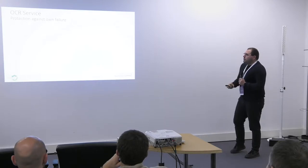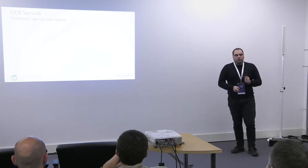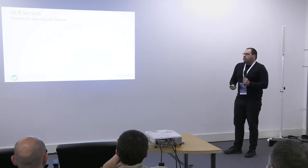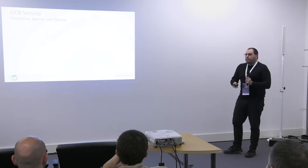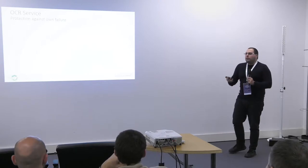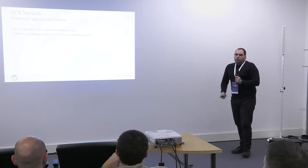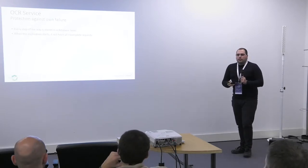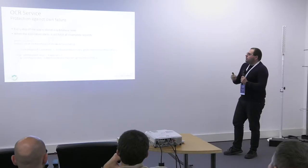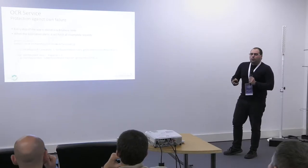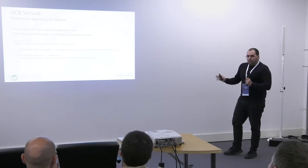We also wanted the OCR service to be protected against its own failure. Imagine there's a queue of files and suddenly the OCR service goes down — we don't want to lose any information. We want it to resume where it left off. To do this, we store every step in a database table. When the application starts, it gets all unprocessed requests from the repository and submits them again to the queue. By the way, we're not using any fancy queue — it's just a thread pool executor.